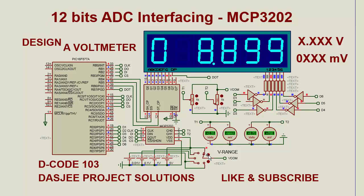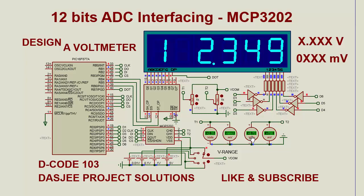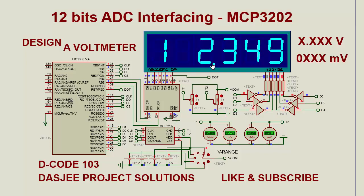We have changed the input voltage range. Now the input voltage is 2.35V and 0.7V, or 700mV. The display now shows 699mV.